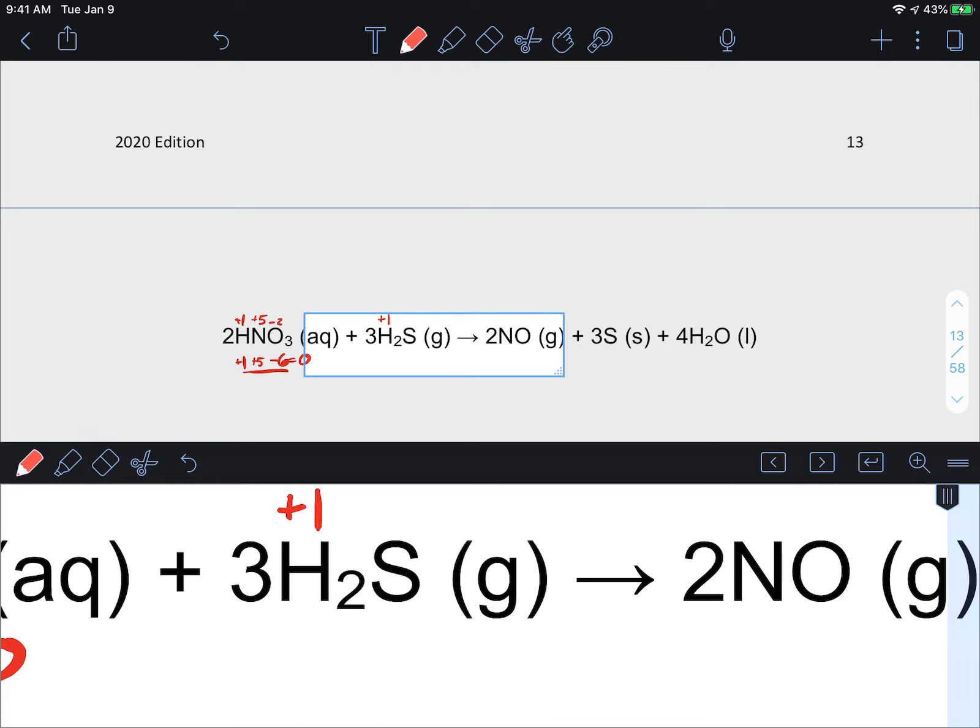Extend this to the hydrogen sulfide. We have an assumed plus one from hydrogen. There's two of them so I'm going to take that through. That means I have a plus two in total from the hydrogens. And it has to equal zero. So the sulfur must be minus two.